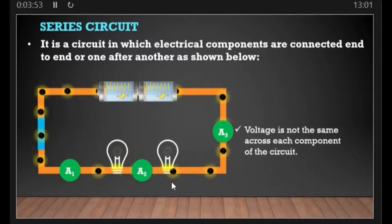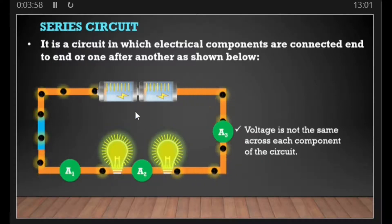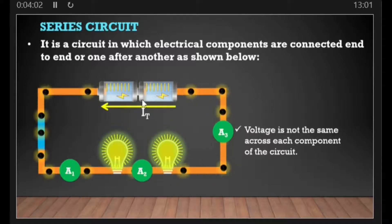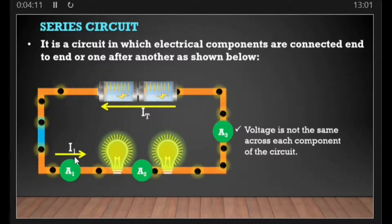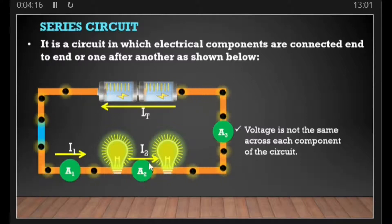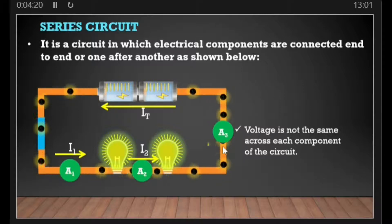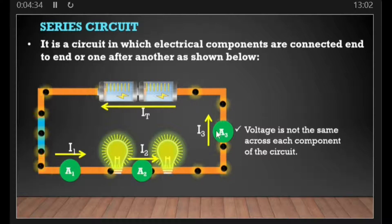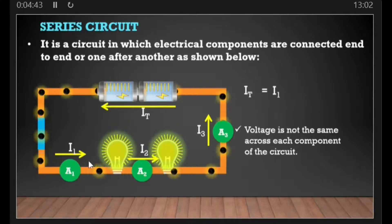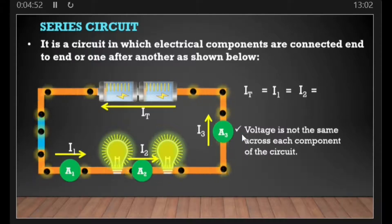In another scenario, if the current produced by the cells is called IT (total current), and the current through ammeter one is I1, through ammeter two is I2, and through ammeter three is I3, then IT equals I1 equals I2 equals I3. The total current produced by the cell is the same as the current flowing through each ammeter in the series circuit.